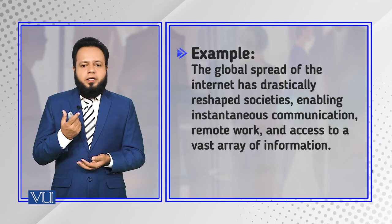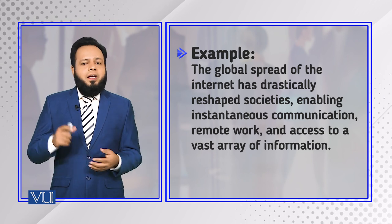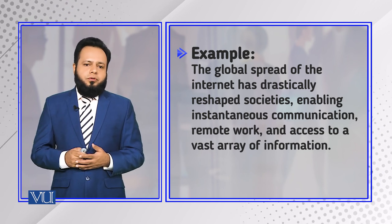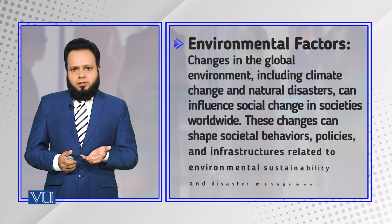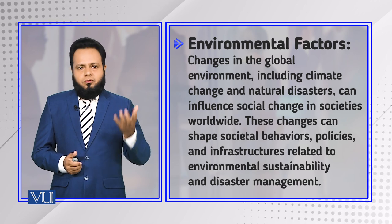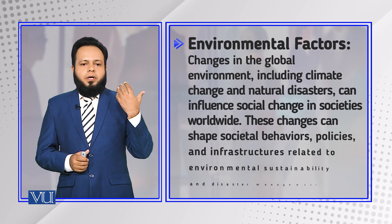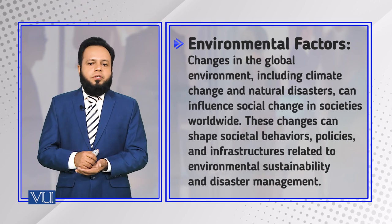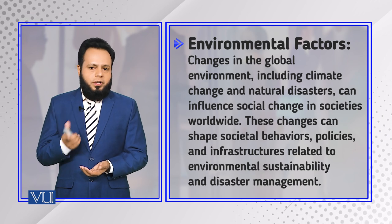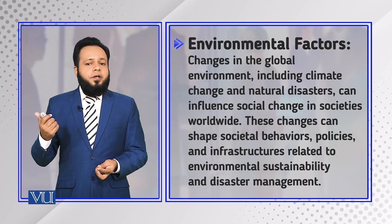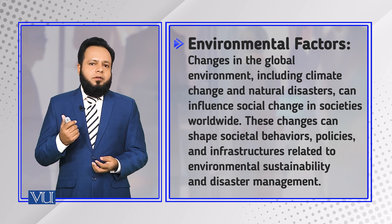For example, the global spread of the internet has drastically reshaped societies, enabling instantaneous communication, remote work, and access to a vast array of information. Environmental factors can also become external sources of social change. If certain societies are producing more carbon compared to others, that production affects not only those societies but also the world around them, influencing social change in societies worldwide.